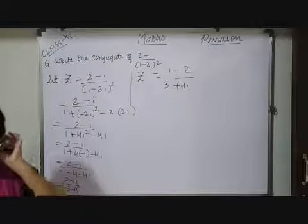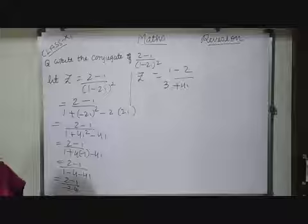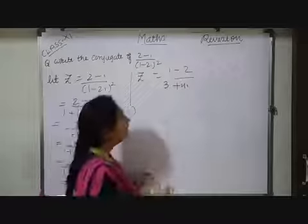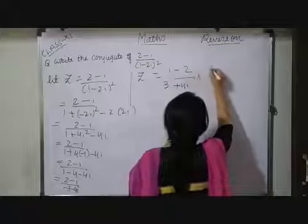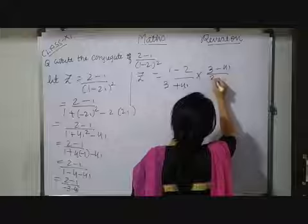Now, see again in a denominator I am having imaginary part. So, to remove it what I should do? I have to rationalize my denominator. How I will rationalize it? By changing a middle sign. So, multiply numerator and denominator by 3 minus 4i.